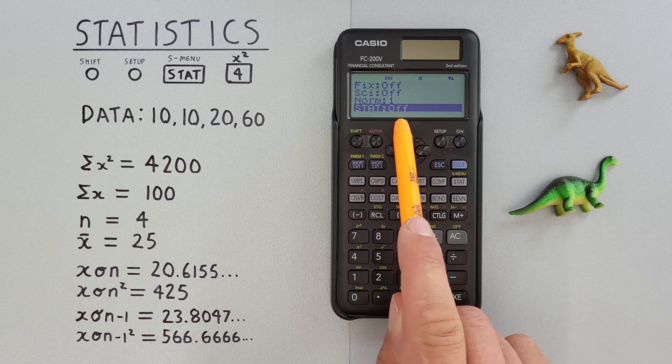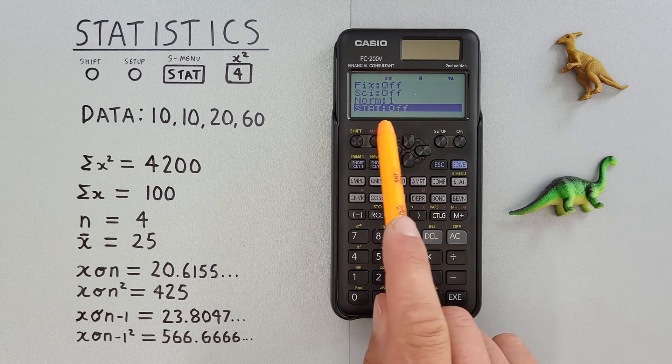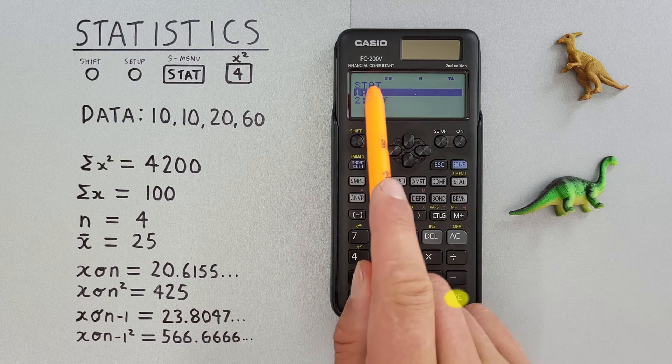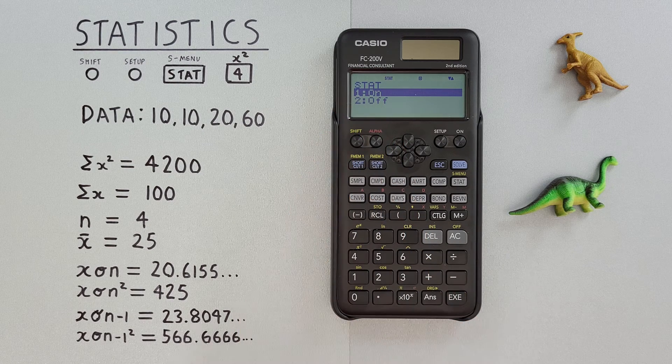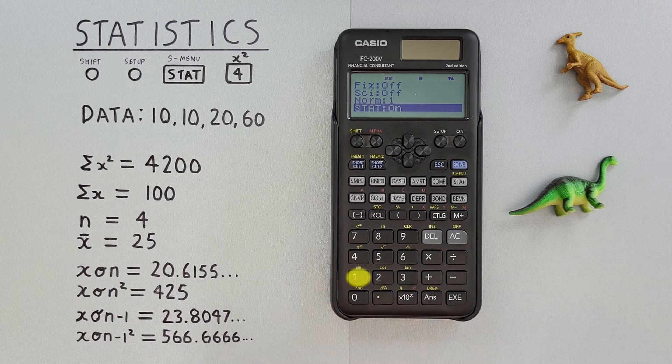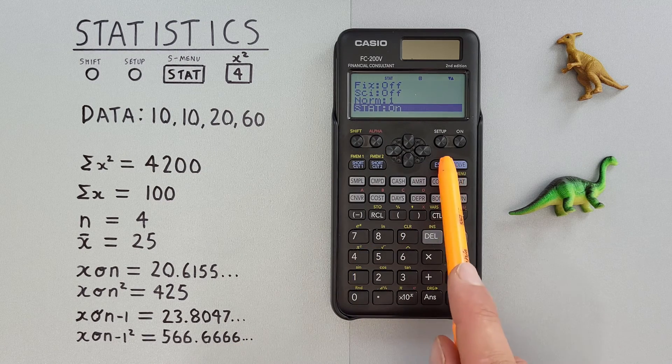Until we see stat. And usually it says off. So if we hit EXE here, we'll have the option to turn stat on or off. We want to turn that on right now, so we'll press one, and then we can escape out of there.